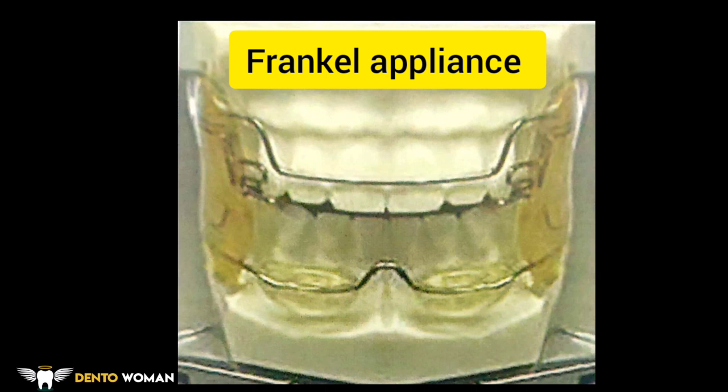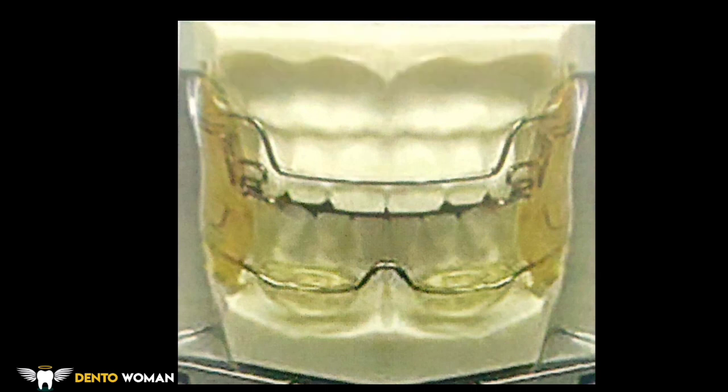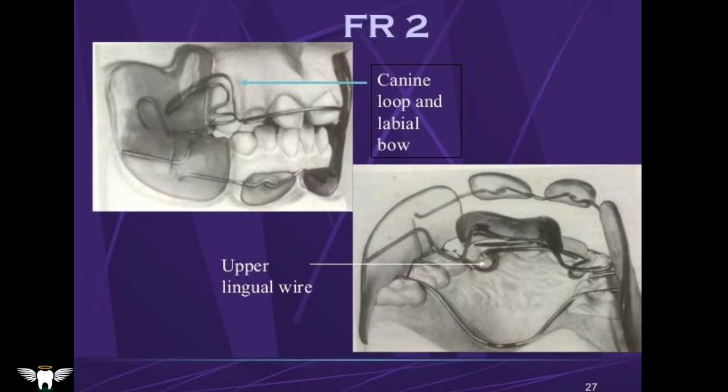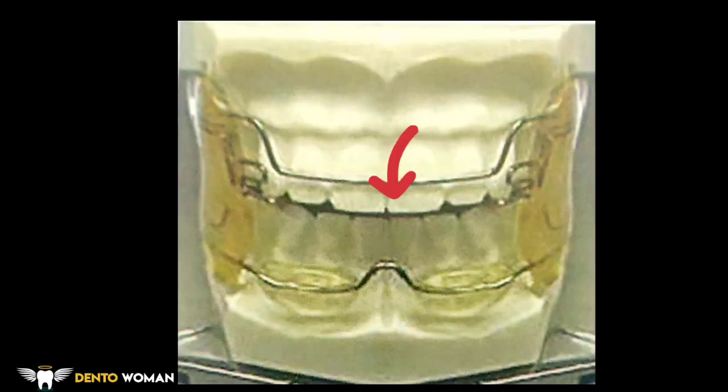Frankel 1 is similar to Frankel 2 in all aspects except that it lacks the lingual shield, lingual springs, lingual crossover wire, and the upper lingual bow seen in Frankel 2. The upper labial bow is a specific component of Frankel 1 and 2 — this is how you differentiate them.